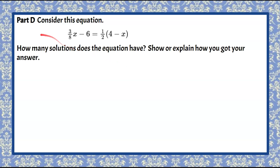Here's Part D. We're asked to consider this equation: three-eighths X subtract 6 is equal to one-half multiplied by the quantity 4 subtract X. We're asked how many solutions the equation has, and we need to show or explain how we get our answer. Go ahead and pause, solve on your own, and then come back to see my solution.